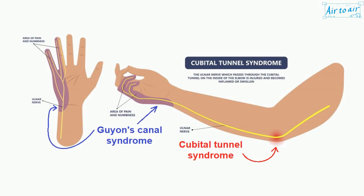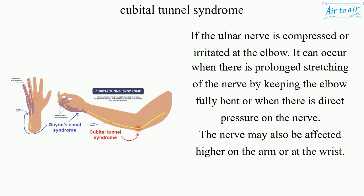Cubital Tunnel Syndrome. If the ulnar nerve is compressed or irritated at the elbow, it can occur when there is prolonged stretching of the nerve by keeping the elbow fully bent, or when there is direct pressure on the nerve. The nerve may also be affected higher on the arm or at the wrist.